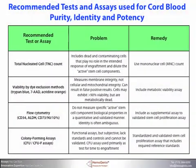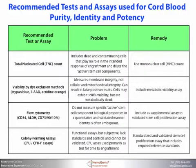Let's take a look first at the recommended tests and assays used for cord blood purity, identity, and potency. There are four of them: total nucleated cell count, viability, flow cytometry, and colony forming assays.